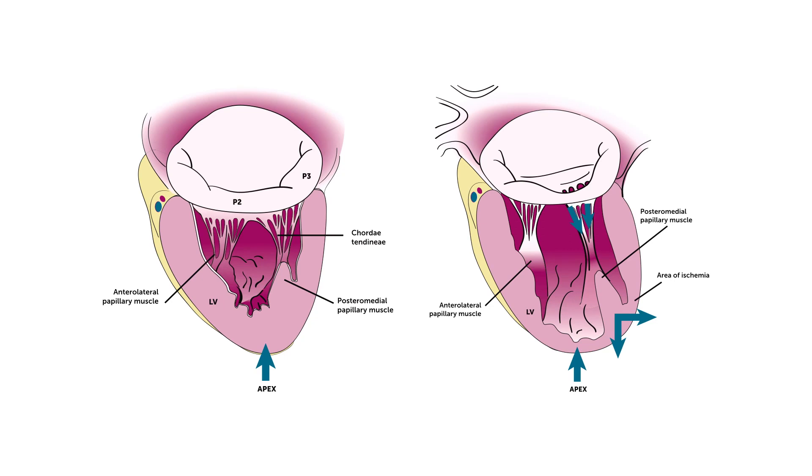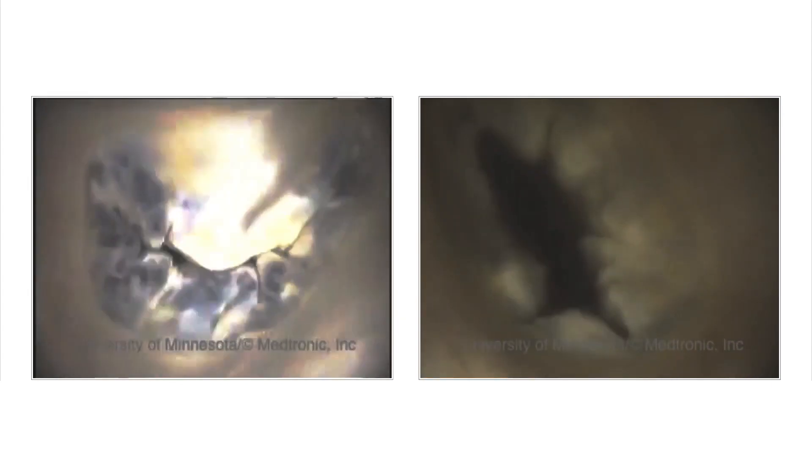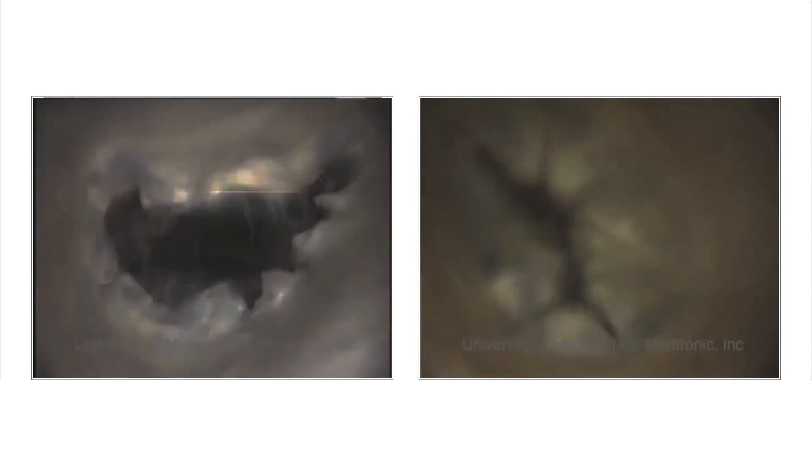You can appreciate how tender the mitral valve is from these images. Here you see that the anterior and posterior leaflets coapt along a surface. You can imagine that if you have just a little bit of leaflet retraction or tension on the leaflets, or a part of the leaflet which is ruptured, you can easily get significant mitral regurgitation.